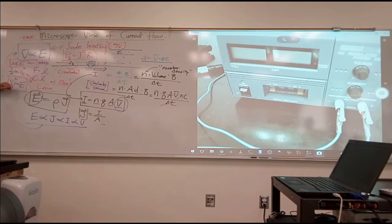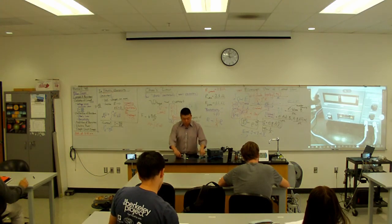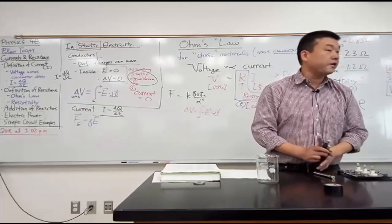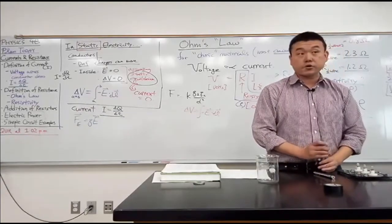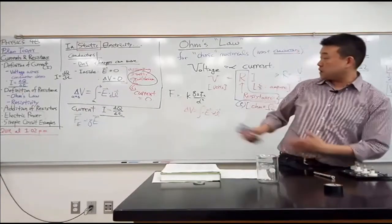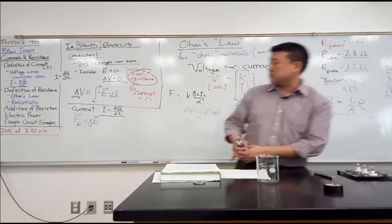Joule heating refers to where you're putting in some amount of power using the power supply, and the energy doesn't go into increasing kinetic energy of these charges — it instead goes into increasing the thermal energy of the material wire. The power of Joule heating is given by the amount of current squared times the resistance: P = I²R. We'll get to that on Wednesday, but I want you to have this picture in your mind that whenever Ohm's law is true, it always involves some kind of loss of electrical energy to frictional thermal energy.